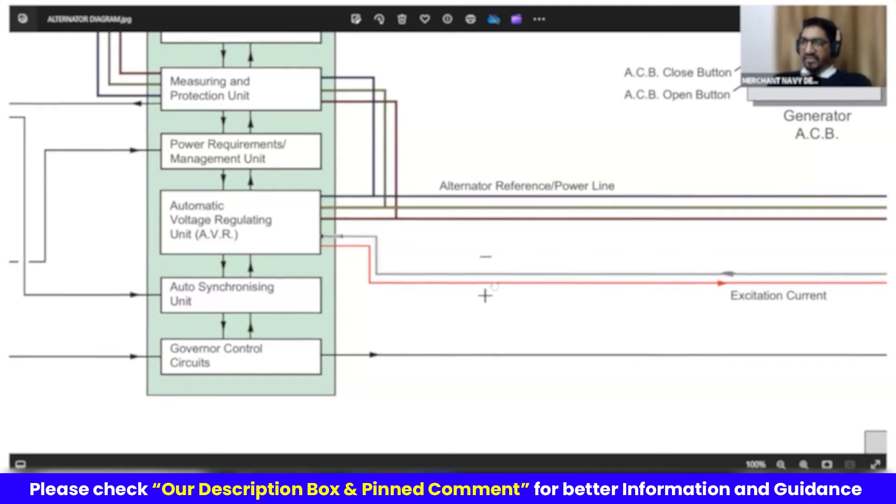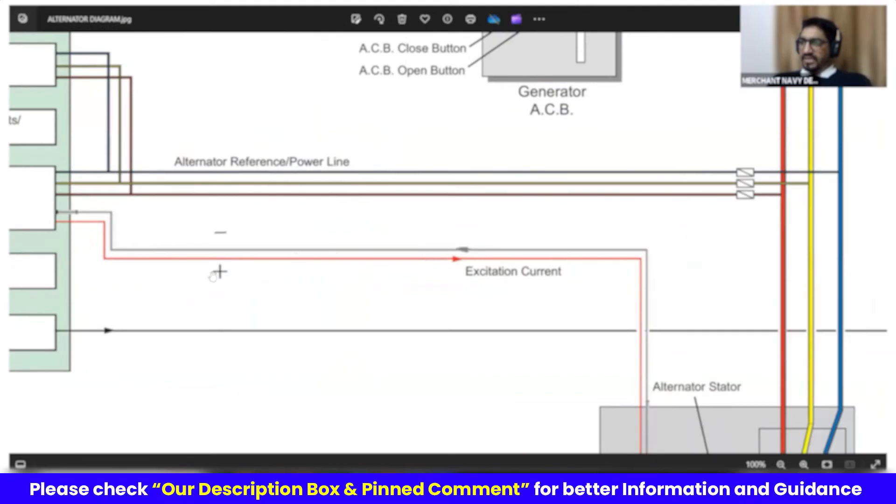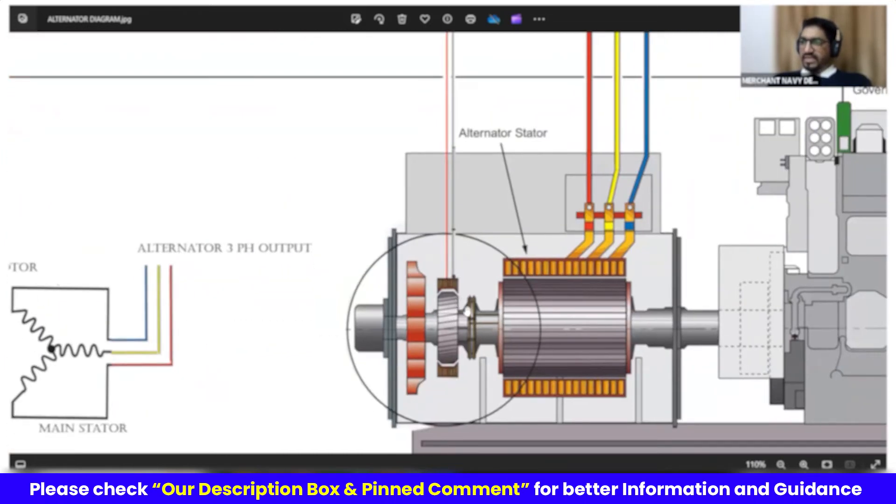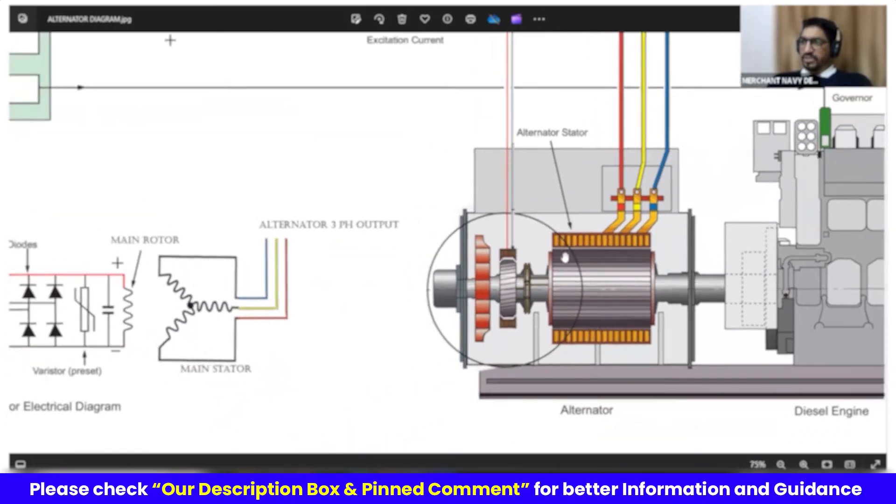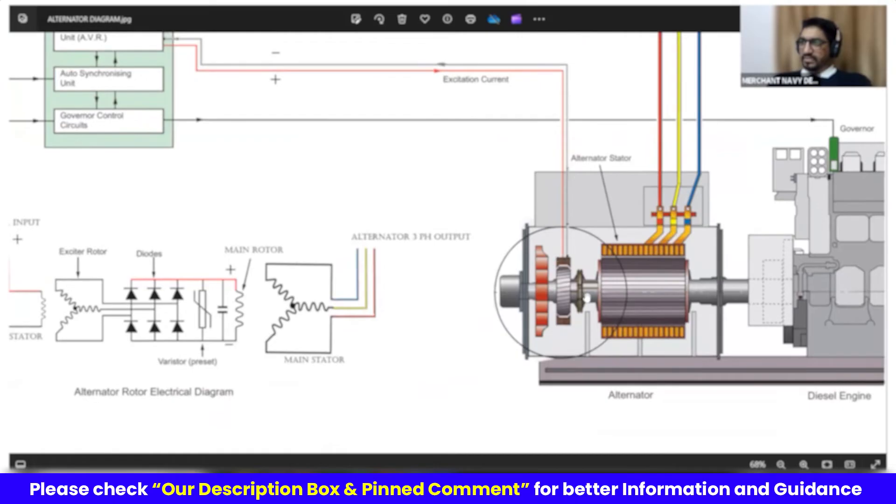Two cables will be going out from the AVR. These two cables, the red one is the positive. Since it is a DC, we have polarity. Otherwise, in AC, we don't need polarity. These two cables will go in the exciter stator.